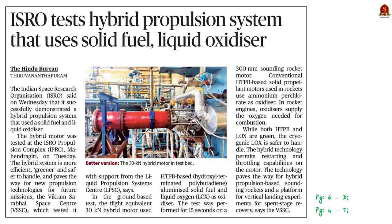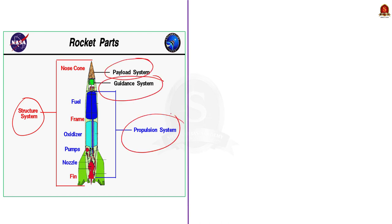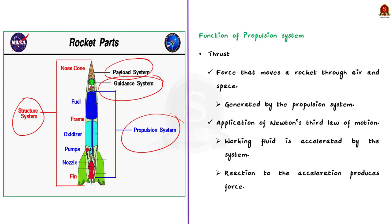Let's move on to the next news article. It says that the Indian Space Research Organization, ISRO, successfully demonstrated a hybrid propulsion system that used solid fuel and liquid oxidizer. The hybrid propulsion system was tested at the ISRO propulsion complex located at Mahendragiri. In this context, let us understand some basics about propulsion systems. Know that there are four major components to any full-scale rocket: the structural system, the payload system, the guidance system and the propulsion system. The propulsion system includes the parts that make up the rocket engine — the tank pumps, propellants, power head and rocket nozzle. The function of the propulsion system is to produce the necessary thrust.